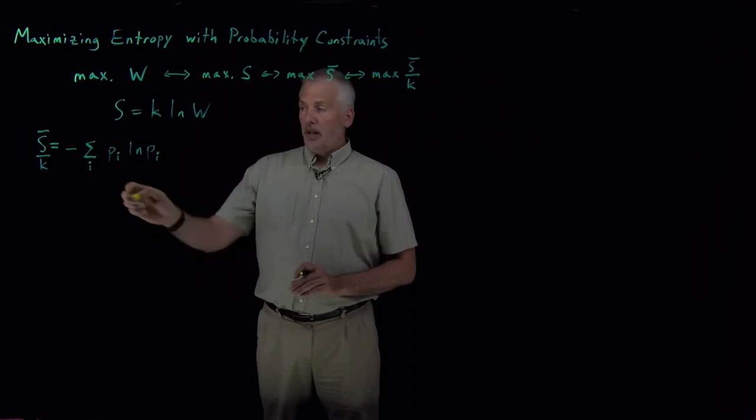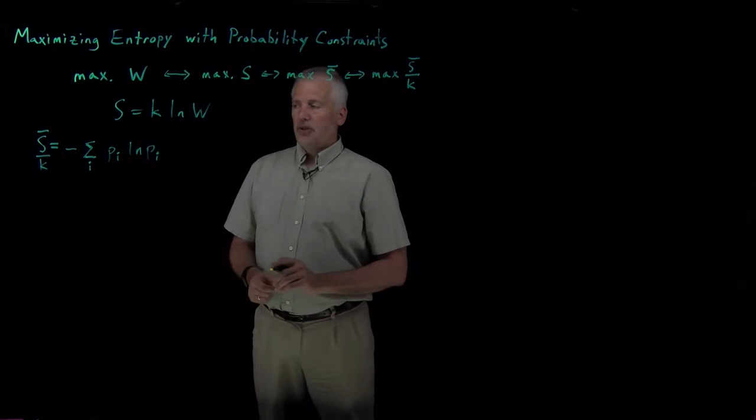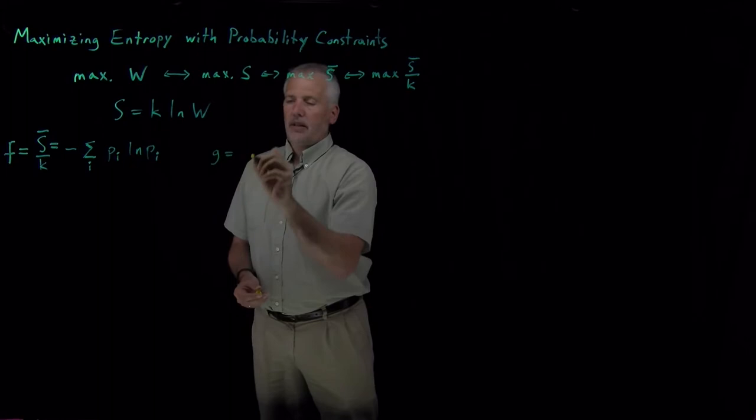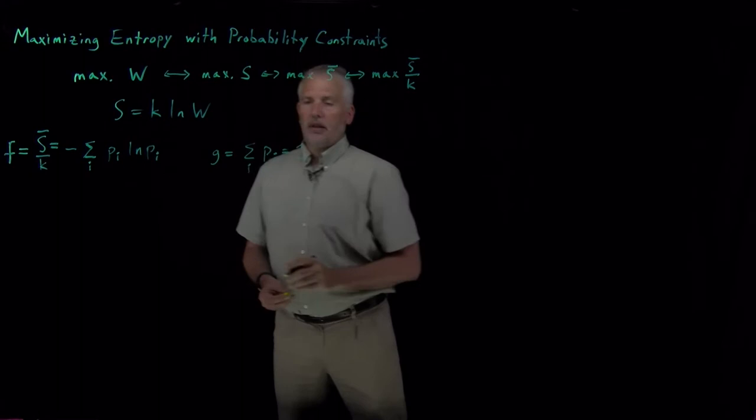But we've learned that we don't actually just want to maximize the entropy. Probabilities have a special criterion they have to obey. If this is the function we want to maximize, F is minus the sum of the P log P's, there's a constraint, which is that those probabilities have to add up to one. So we want to maximize this function subject to this constraint.